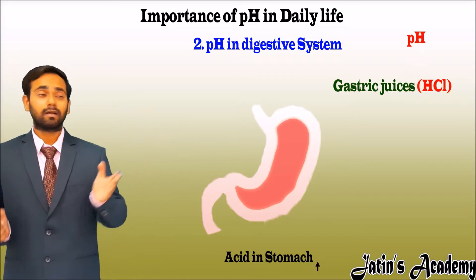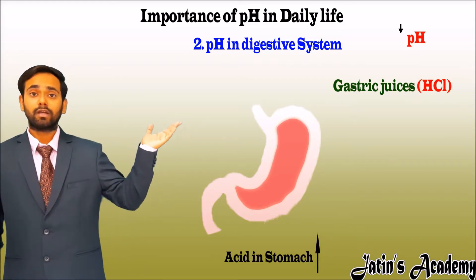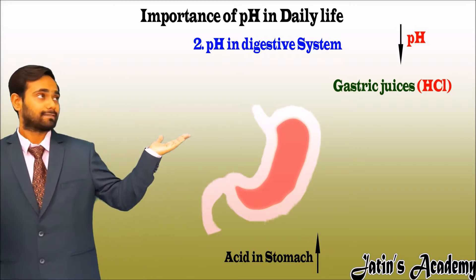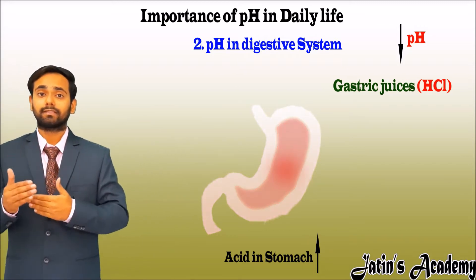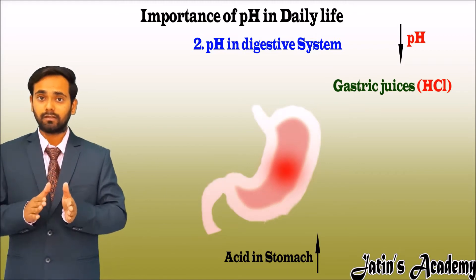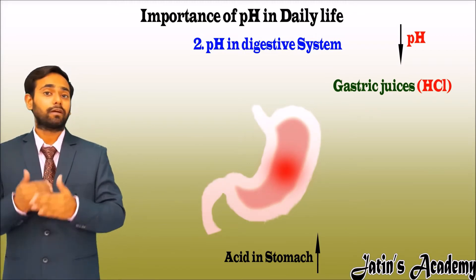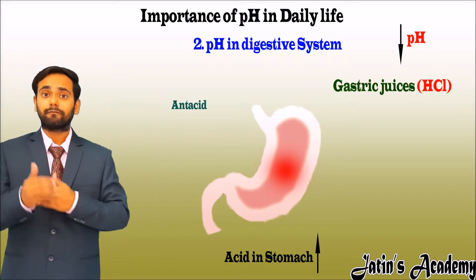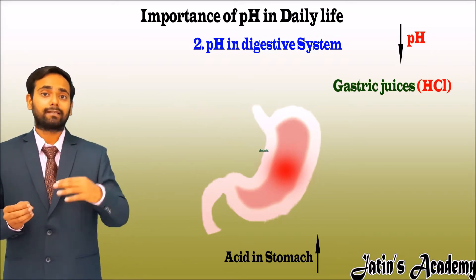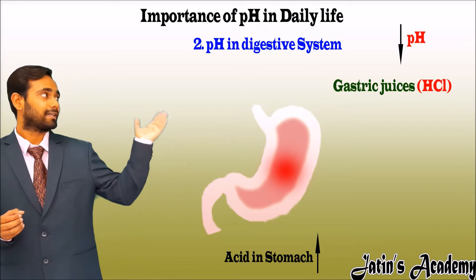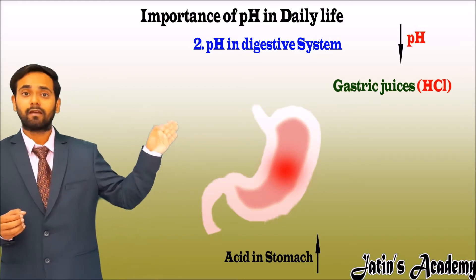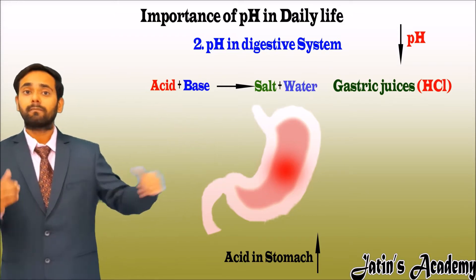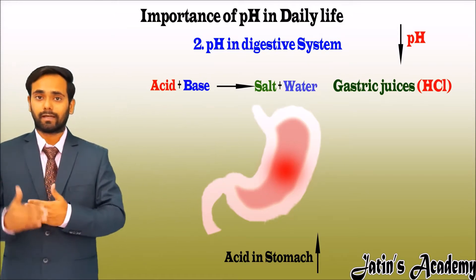When the acid value increases in our stomach, we need to decrease it, because high acid causes indigestion. In order to neutralize the acid, we eat antacid. Antacid is nothing but a base. When acid reacts with a base, it forms salt and water, neutralizing the effect of the acid.